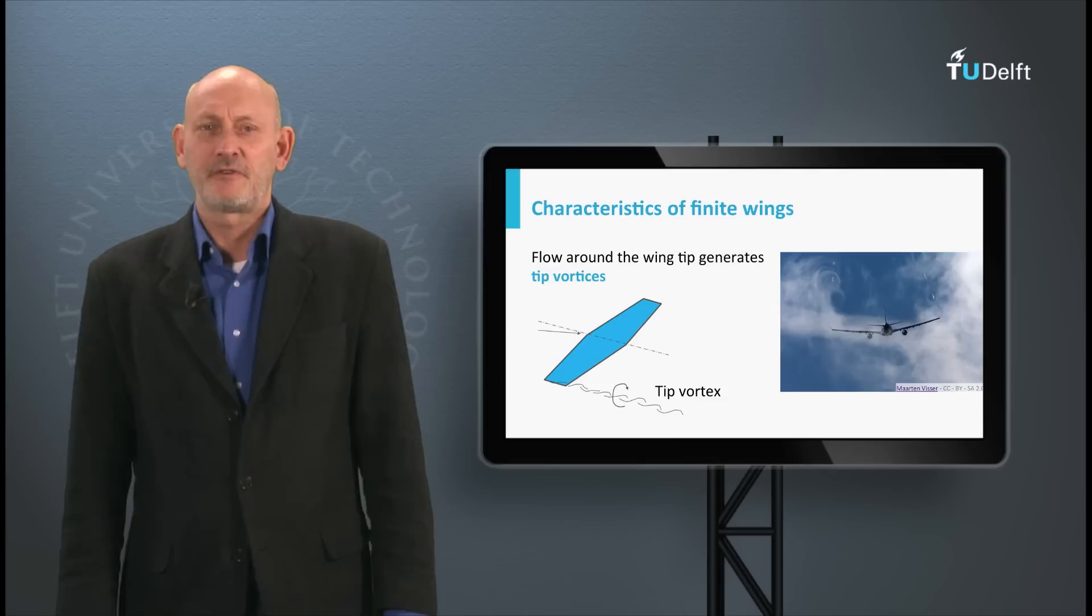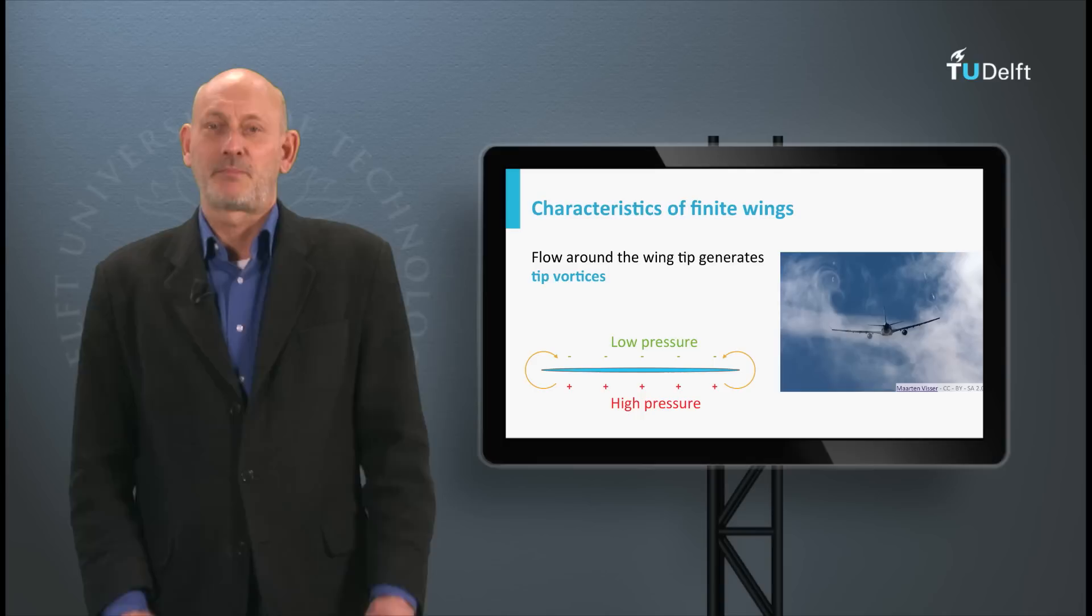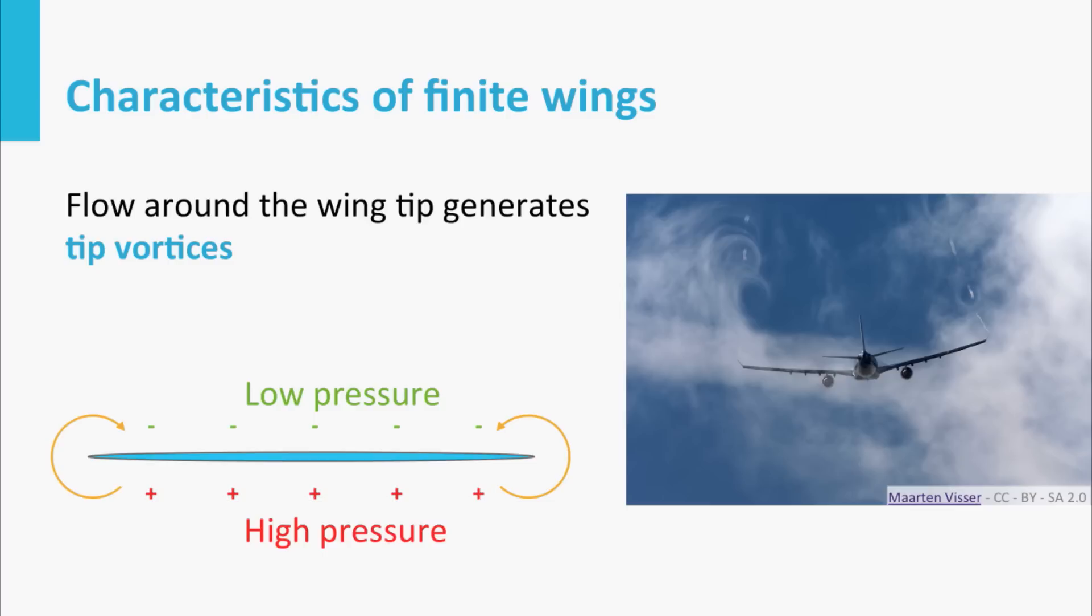Since we generally have a high pressure at the lower surface and a lower pressure at the suction side of the wing, air is leaking, so to speak, around the wingtip, from the pressure side to the suction side, forming a tip vortex.